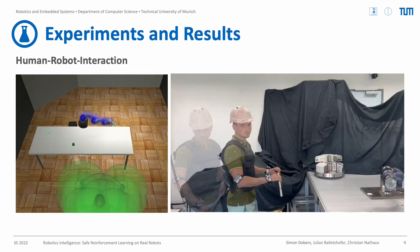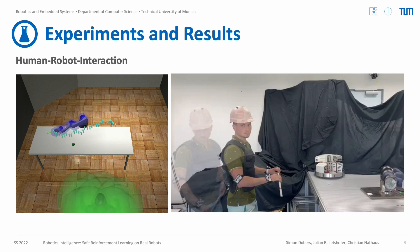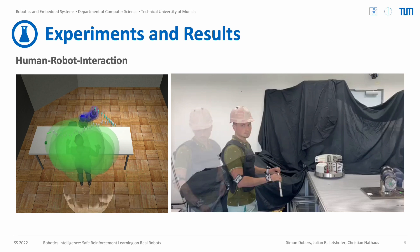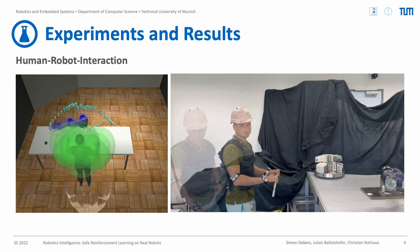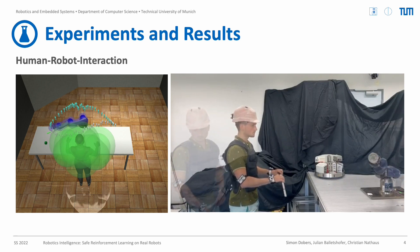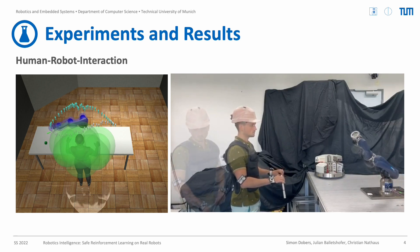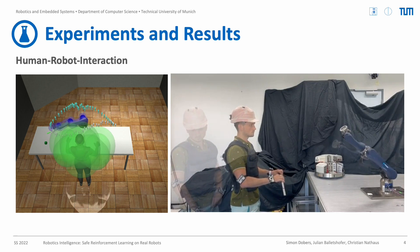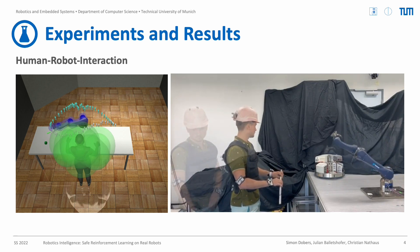If the human is far away, you can see that the agent takes the lower path to reach the goal. If the human is close, however, you can clearly see that the agent takes the upper path in order to avoid a collision with the human. So the agent definitely learned to collaborate and react to the human.